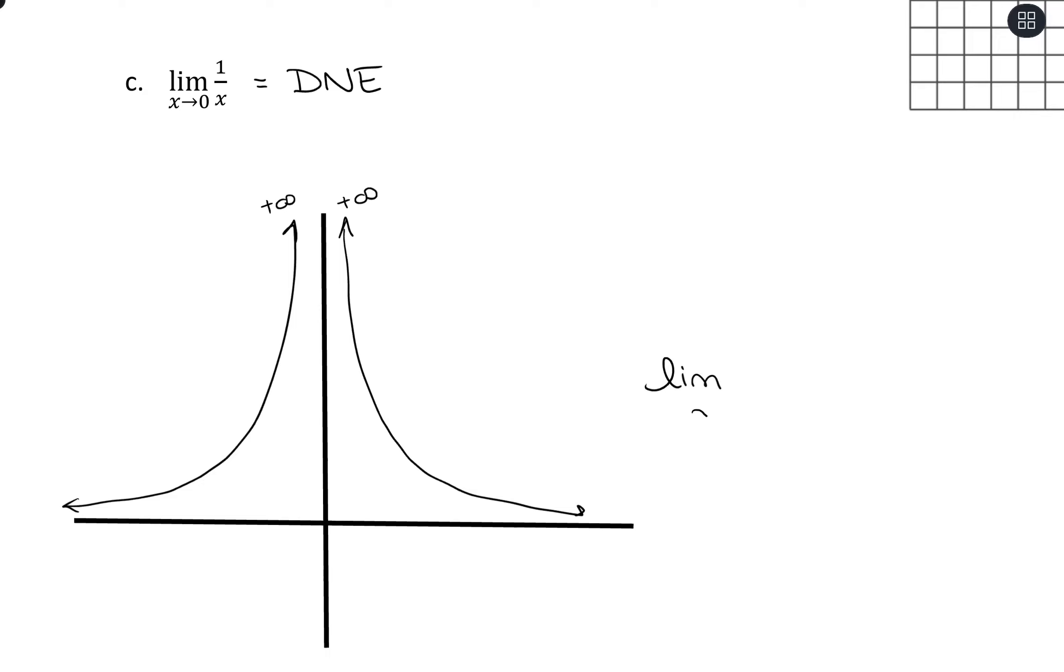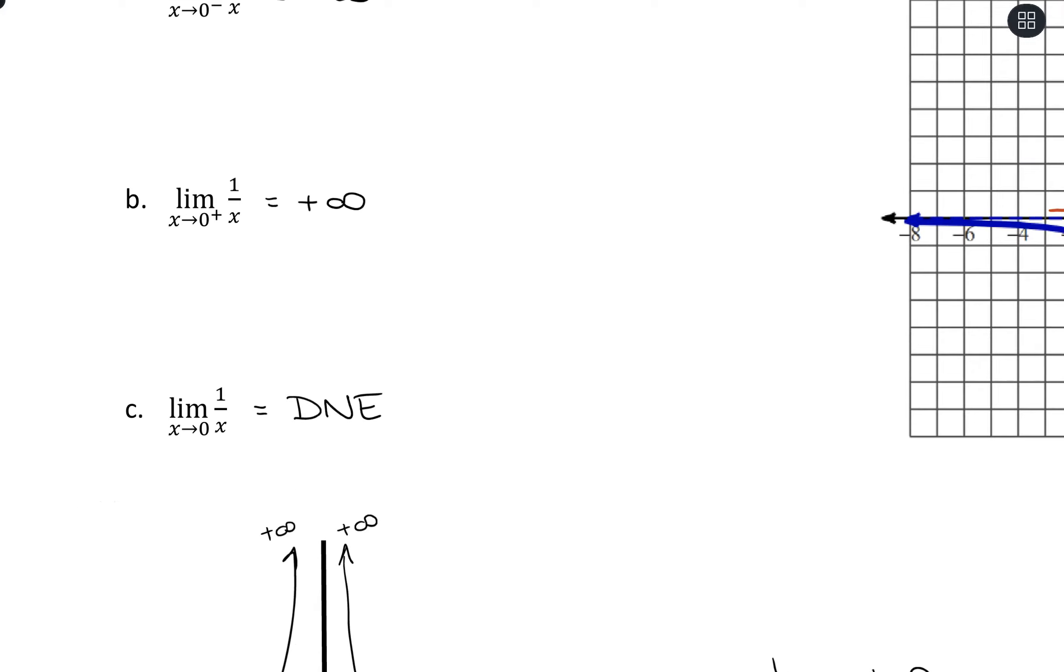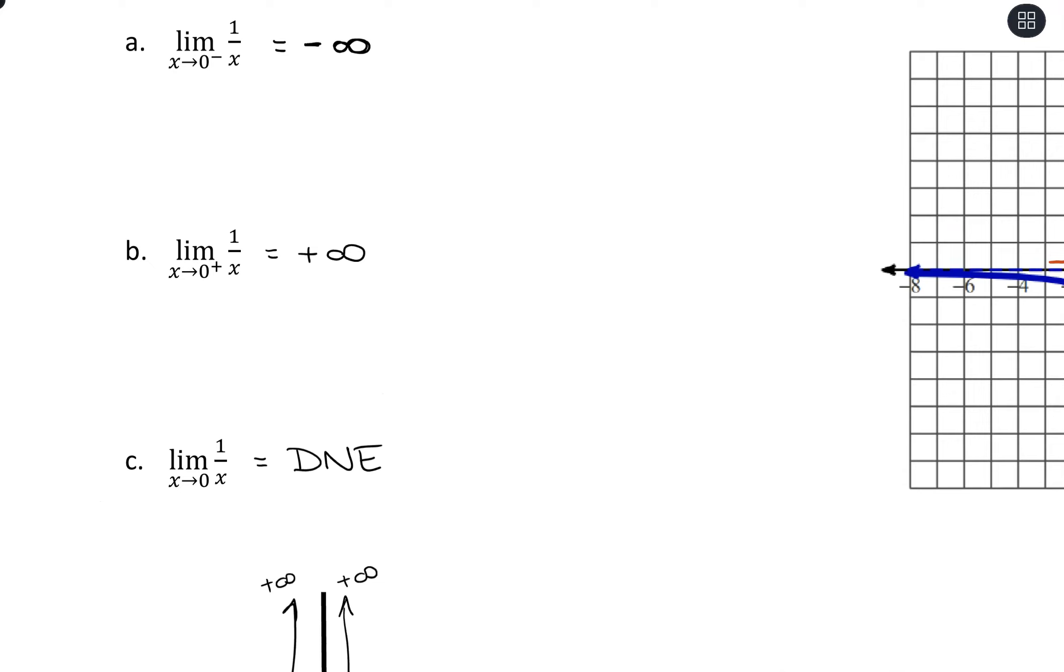If I wanted to evaluate the two-sided limit as x approaches 0 of 1 over x squared, because they match up, it would also be positive infinity. It follows the same rules as in the previous video when we had numerical outputs. If we have infinity as an output, it's the same idea that they have to match up for it to have the two-sided limit. If they don't match up, then that two-sided limit does not exist.